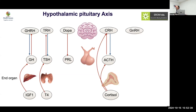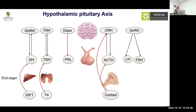GnRH is a very interesting hormone — it is a decapeptide. The same GnRH molecule regulates both LH and FSH, which is an economical evolutionary solution. The same molecule regulates two different hormones that have different levels because if the signal comes fast, more LH is produced; if slow, more FSH. Additionally, LH and FSH have different half-lives, which is why their circulating levels differ.